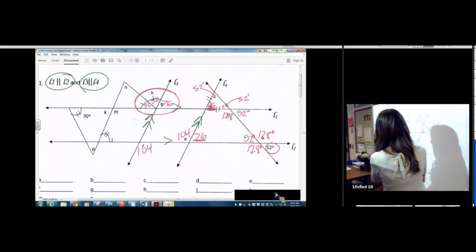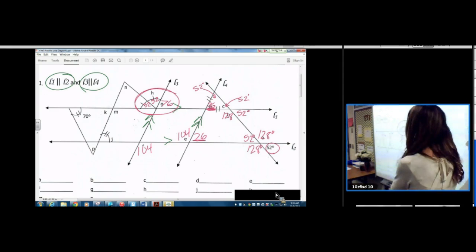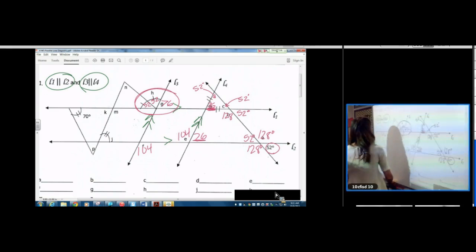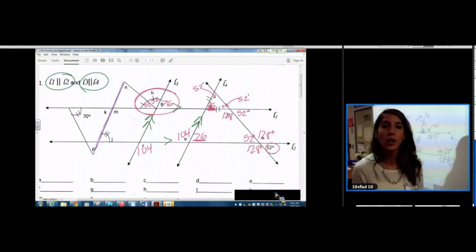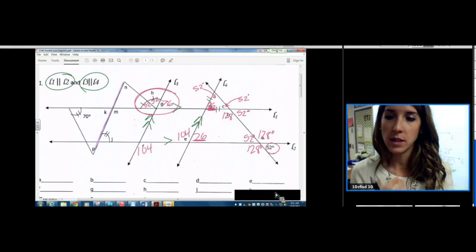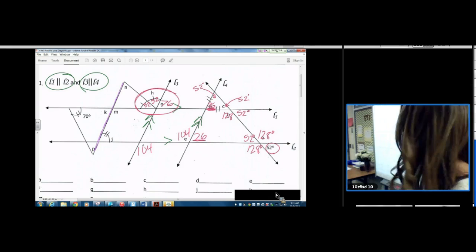Now we can do... If we're trying to... Now the problem is, be careful because this line is not parallel to anything. So be careful. You can't use corresponding angles and put the 104 there. No. Because you have to only use your theorems with parallel lines. Don't use it on lines that are not parallel. So be careful with that purple one.